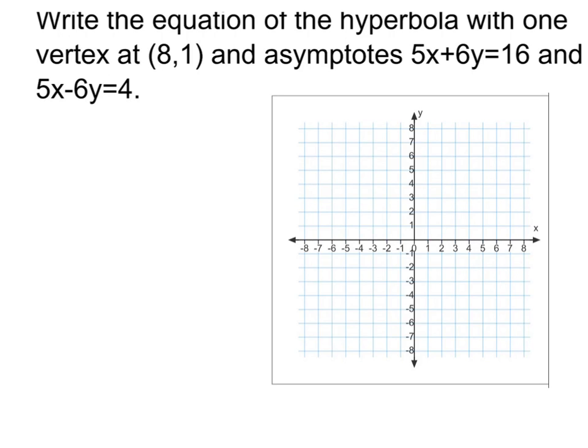In this example, they're asking us to write the equation of a hyperbola where they tell us a vertex and then two asymptotes.